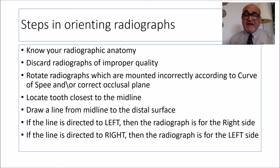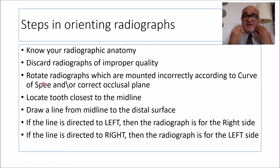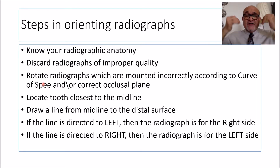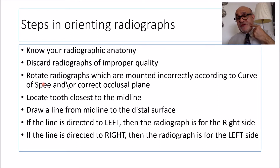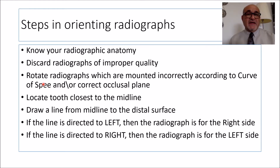A third consideration is that in digital radiography, sensors placed inside the oral cavity can capture a radiograph whether placed in one direction or the other. So you may end up with images that are flipped. Before you orient a radiograph, you need to flip it according to the proper occlusal plane or the curve of Spee, and then the next step of orienting the radiograph can be done.